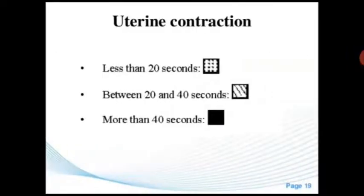Uterine contraction duration categories on the graph: less than 20 seconds, between 20 to 40 seconds, or more than 40 seconds.